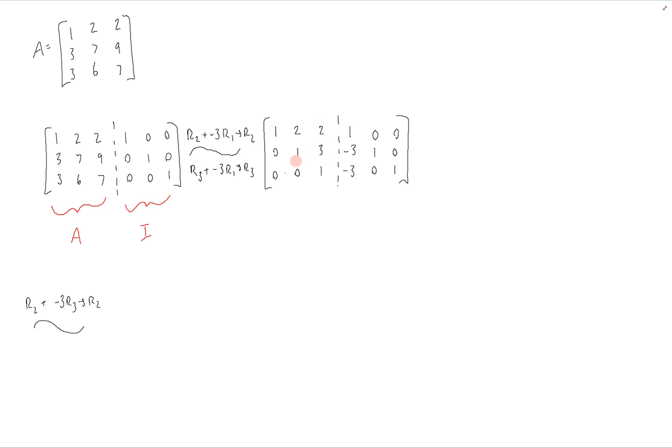And then to get rid of the entry on top, it's going to be row one plus negative two times row three to replace row one. And the result looks like this.